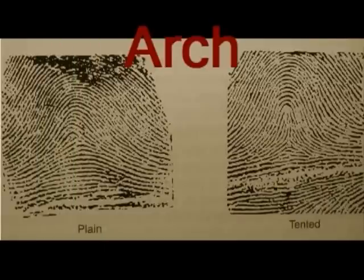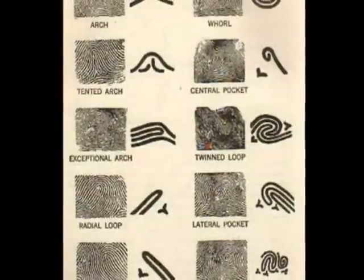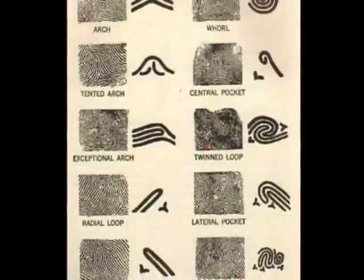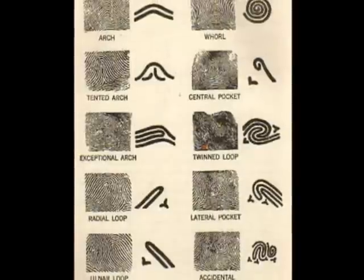Arches slope upward and then downward. They have no deltas or cores. Arches make up only 6 percent of all fingerprints. Tinted arches contain an angle or up thrust and look similar to a loop. Plain arches contain a rise or wave in the center. Composites of level 1 identification are a combination of loops, whorls, and arches. Any combination may occur.